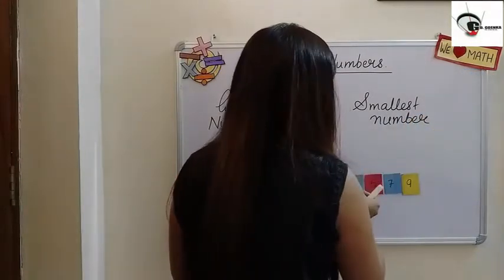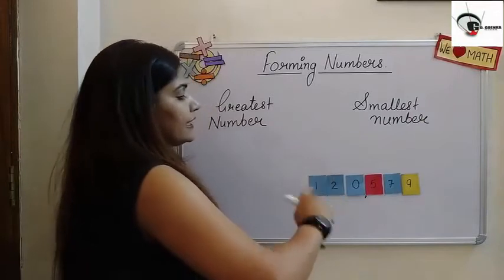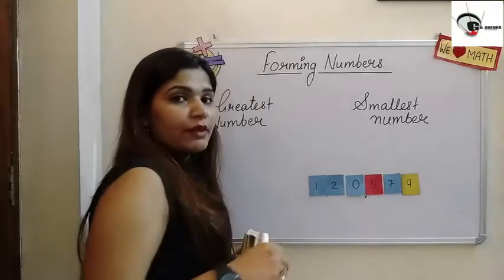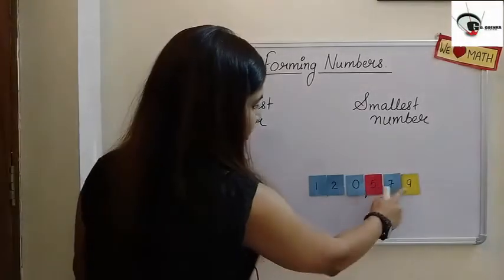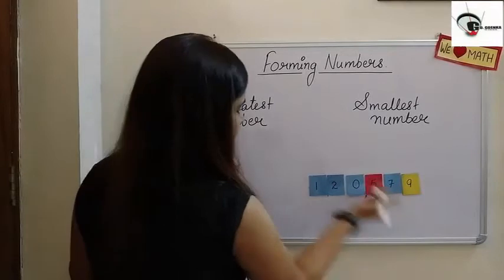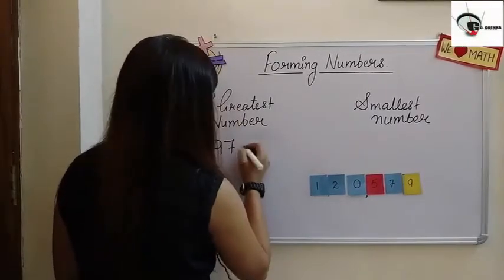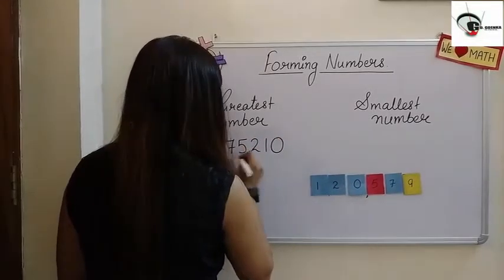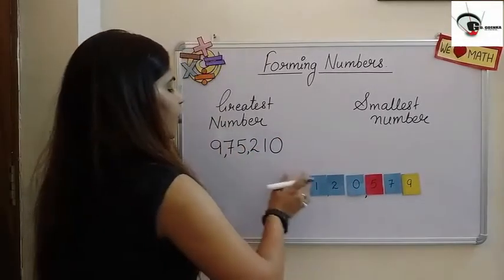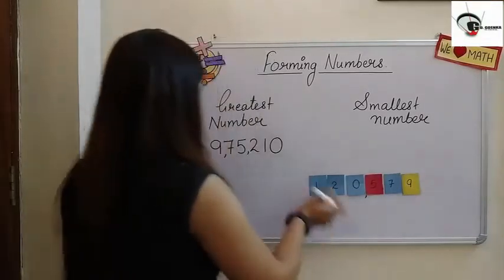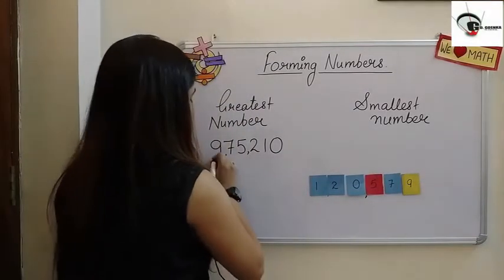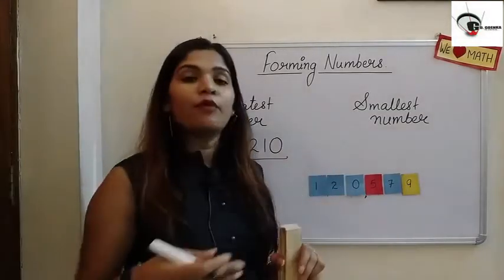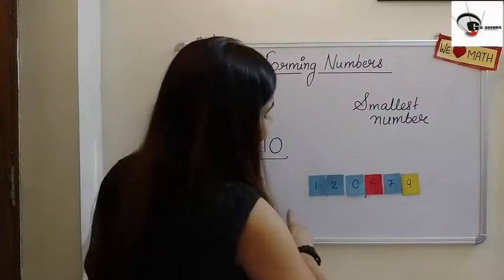If somebody asks to form the greatest six-digit number using these digits, the greatest one will be nine, then seven, then five, then two, one, and zero. So the greatest number formed by using these digits is nine lakh seventy-five thousand two hundred and ten.